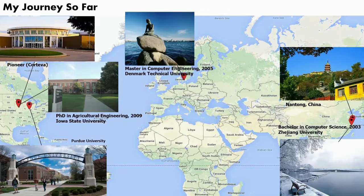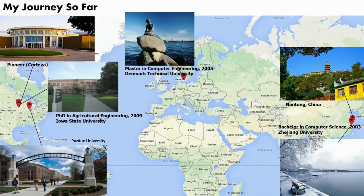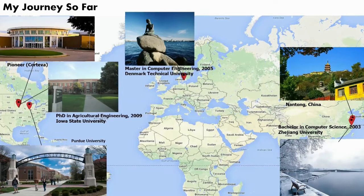After my graduation, I traveled to Europe. The Little Mermaid was one of the major reasons I chose to travel to Denmark, but of course we also have a top-ranked technical university there, and I studied computer engineering. After two years, I came to Iowa State University and studied for my PhD in agricultural engineering. I know this sounds unusual — a student transferring from computer science — but I would say this is one of the wisest decisions I made, because it gave me the opportunity to apply what I learned from computer science in a huge market, which is agriculture.